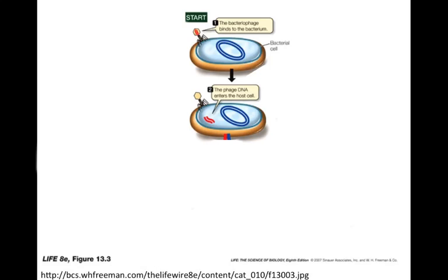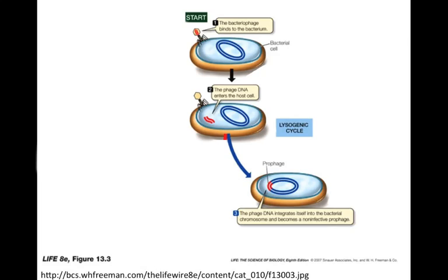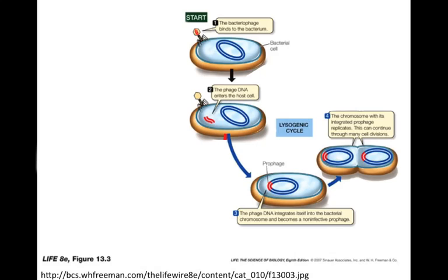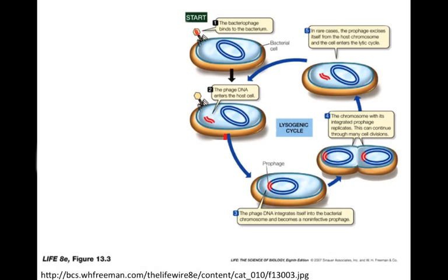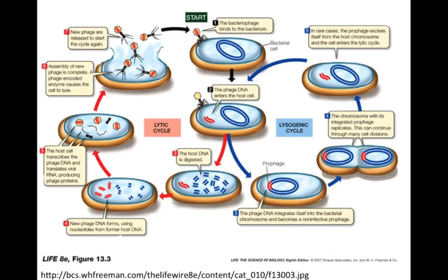Some phage also have another, less destructive way of reproducing. After the DNA is injected into the cell, it incorporates itself into the bacterial genome. Once incorporated, we call it a prophage. As the bacteria replicates, the viral genome gets replicated with it — and bacteria divides very rapidly with exponential growth. Any of these daughter cells can later enter the lytic cycle: the prophages remove themselves from the host genome and go into the lytic cycle, often triggered by some sort of stress, leading to destruction of the host.